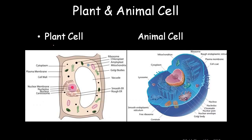We have gone through the complete various organelles in plant and animal cells. The structures include: plasma membrane, cell wall, nuclear membrane, nucleus, centrosome, smooth and rough endoplasmic reticulum, vacuole — which is bigger in plant cells — Golgi bodies, mitochondria, amyloplast, and chloroplast. These are the two structures — plant cell and animal cell — that we have just studied.